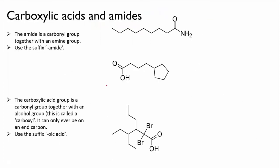Let's try some examples. This molecule at the top is clearly an amide, so we count the longest chain, and don't forget to include the carbon that is part of the amide group — it is part of the main chain. So there are nine carbons, so it's based on nonane, and to indicate the presence of the amide group, we change the suffix to give nonanamide.